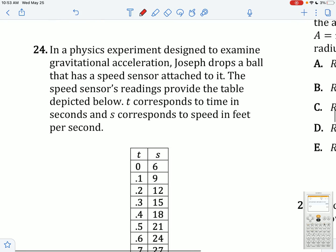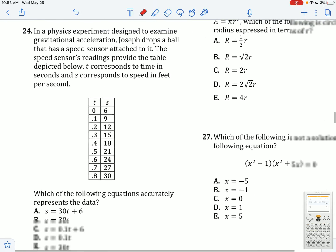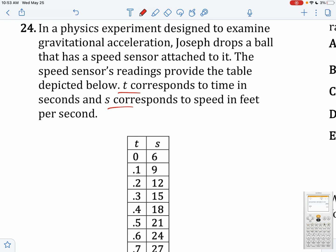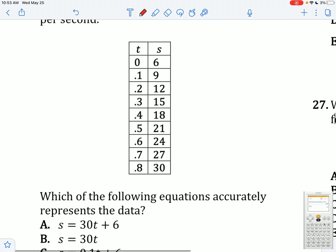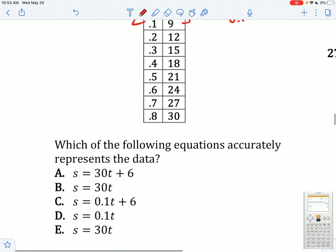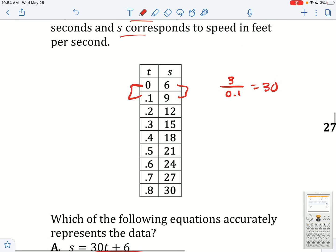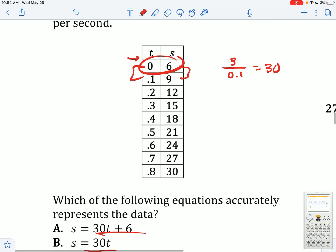In a physics experiment designed to examine gravitational acceleration, Joseph drops a ball that has a speed sensor. The readings provide the table depicted below. t corresponds to time and s corresponds to speed in feet. Which of the following accurately represents the data? What's the slope? I can do the difference here, 3, divide by the difference here, 0.1, we end up getting a slope of 30. So immediately these are out. Now what's my y-intercept? It looks like when the x value is just 0, my y-intercept is going to be 6.